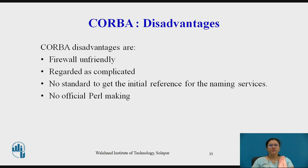Now we will see the disadvantages of CORBA. The disadvantages are: it is firewall-unfriendly, it is regarded as complicated compared to other platforms, and there is no particular standard to get the initial reference for the naming services, so no official rule-making is possible. These are the few listed disadvantages of CORBA.